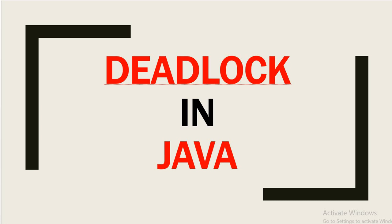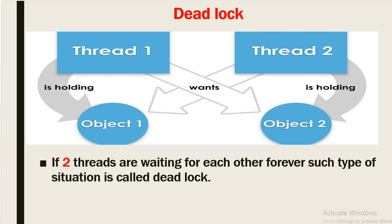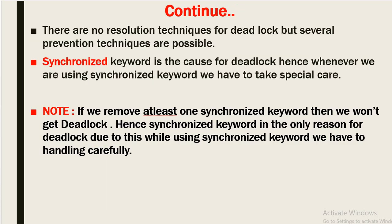Hello, welcome back to this channel 'Gain Java Knowledge'. Today we are going to discuss what is deadlock in Java and how we can prevent it, and when this situation will arise. If two threads are waiting for each other forever, such a situation is called deadlock. Thread one is holding object one but waiting for object two, and thread two is holding object two and waiting for object one — forever. This is called deadlock.